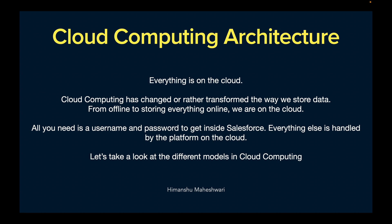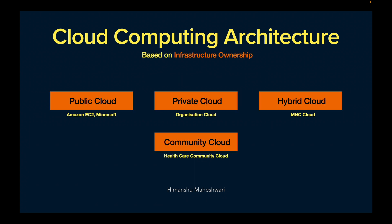Let's now look at the different models in cloud computing based on infrastructure ownership — who owns the infrastructure. There are four primary kinds. The first is the public cloud, which is available to the general public. Examples include Gmail, Outlook, Microsoft services, and Amazon EC2, where you can access compute and memory instances by paying a price. These are examples of public cloud — whatever is available to the general public.